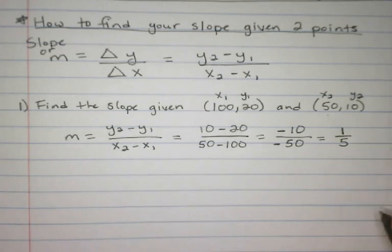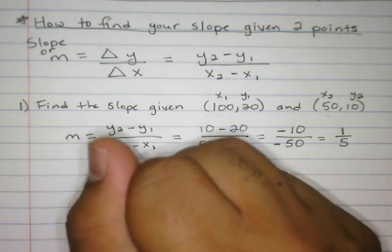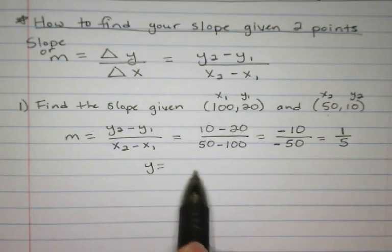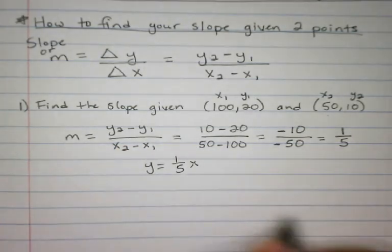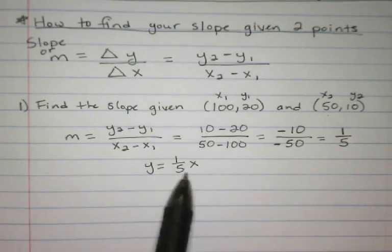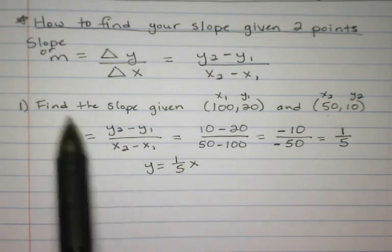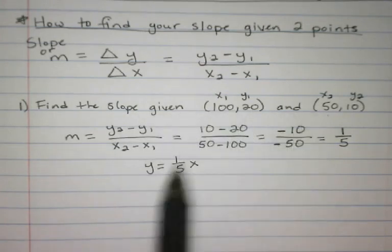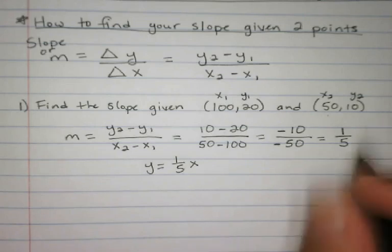So if I'm writing this out, the slope would be one-fifth, so y would equal one-fifth x plus whatever the y-intercept is. This right here is helping me get my slope. There will be problems where they ask you, given two points, find your slope — you have to be able to find it.